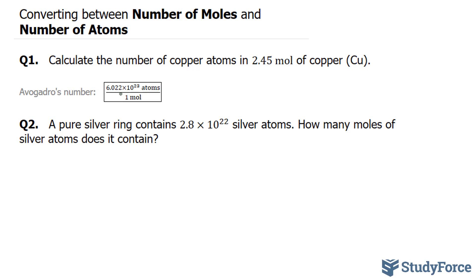So for the first one, we are converting 2.45 moles of copper. Now to find the number of atoms, you need to multiply this number by Avogadro's number. And as I mentioned, you can flip this fraction as you wish.